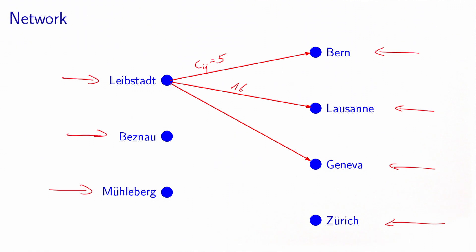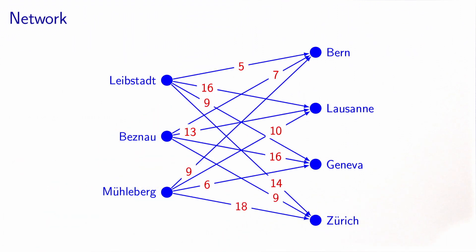Leibstadt-Geneva is 9, and Leibstadt-Zurich is 14. So this is the complete network, where one arc represents the possibility for one supplier to serve a customer. And a cost is associated with each of these arcs.